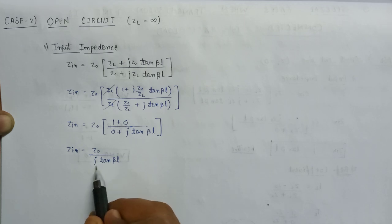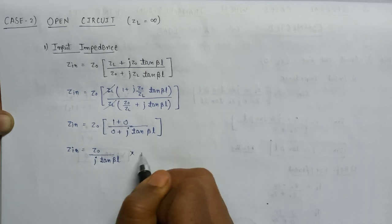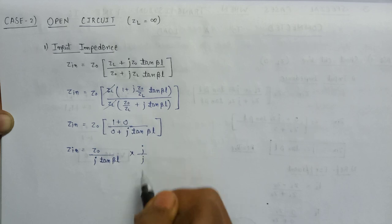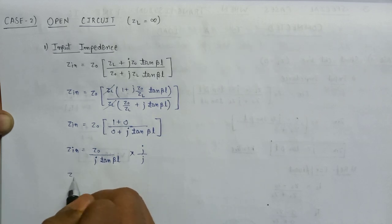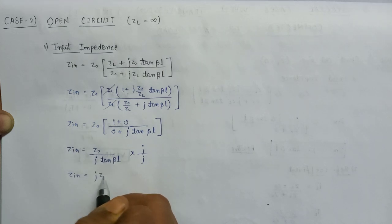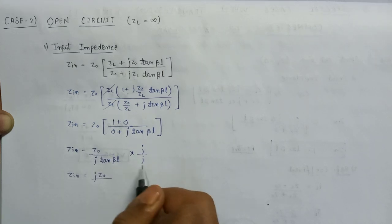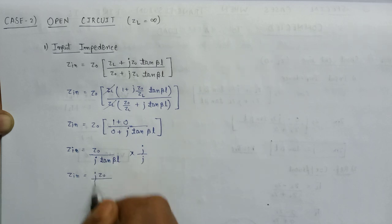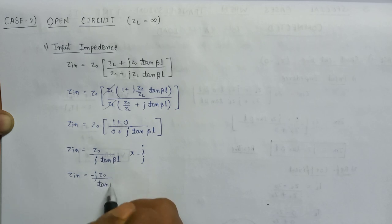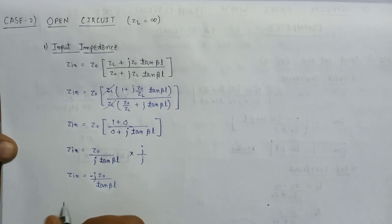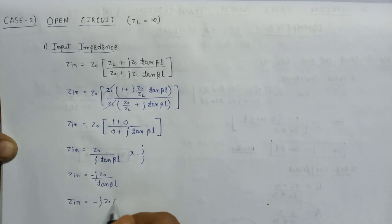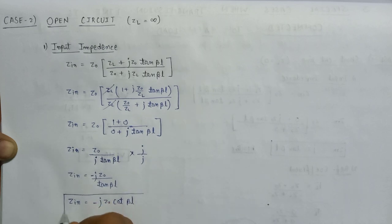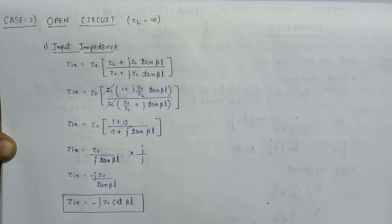On removing the imaginary term j from the denominator by cross-multiplying numerator and denominator, Z_input becomes −j·Z0 / tan(βL), which can also be written as Z_input = −j·Z0·cot(βL). This is the final expression for input impedance when the line is open circuited.